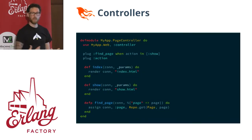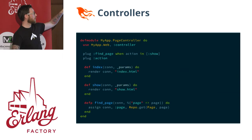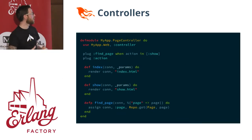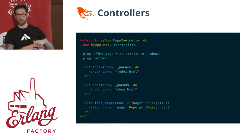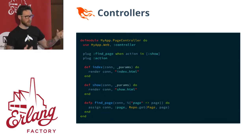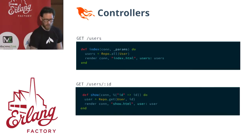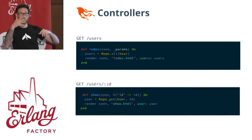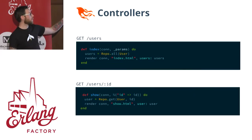Controllers are basically plugs themselves. Plug comes in and you can do stuff like plug find_page, which will actually call this function before it calls the action itself. Then we plug action explicitly to say that we want to call the action that you're doing, taking the connection and some parameters for the request. If you're going to get the index of users, you'll do a GET request to /users, which will call the index function — typically grabbing all your users out of the database and rendering them.